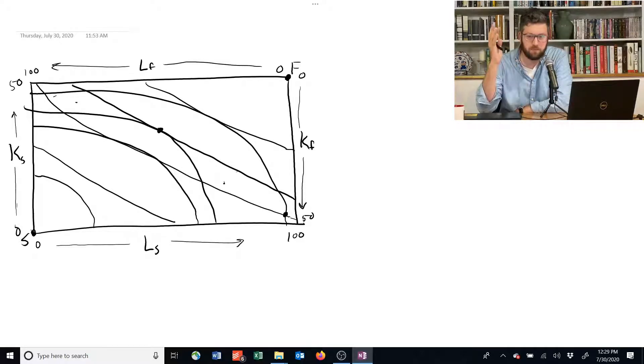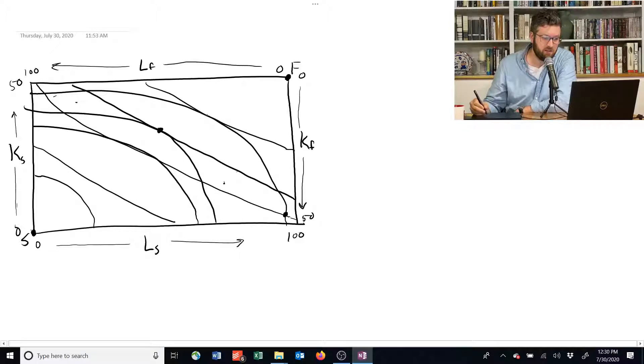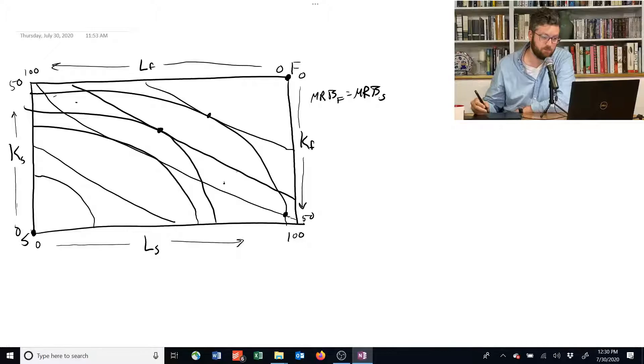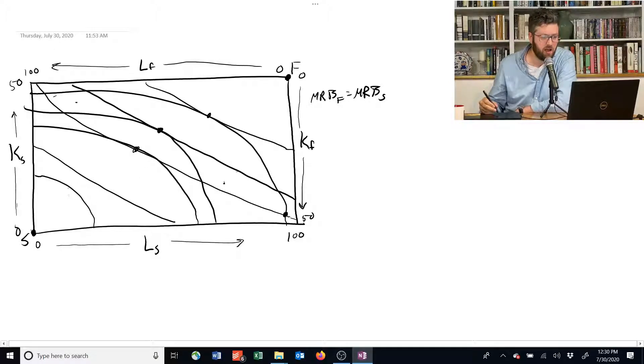But there are other points too. You can see that this point here is another point where the marginal rate of technical substitution for food is equal to the marginal rate of technical substitution for shelter. That is, the slopes of the isoquants are again equal to each other. You can also see one here, it's a little bit messier. In general, there's going to be lots of these things, and we can draw a line through all of them.